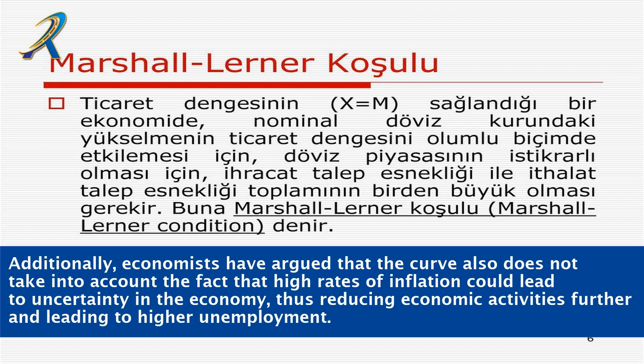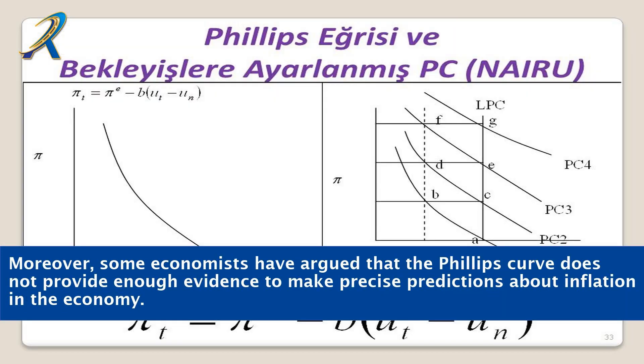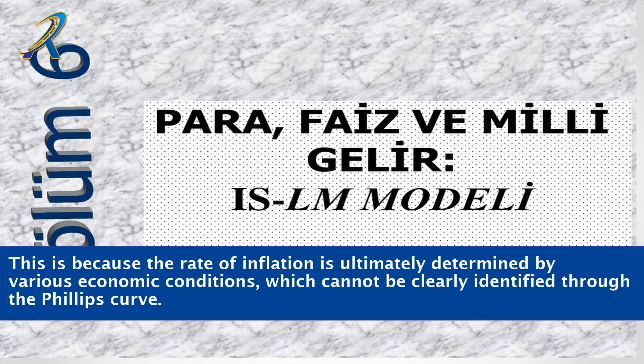Additionally, economists have argued that the curve does not take into account the fact that high rates of inflation could lead to uncertainty in the economy, thus reducing economic activities further and leading to higher unemployment. Moreover, some economists have argued that the Phillips curve does not provide enough evidence to make precise predictions about inflation in the economy, as the rate of inflation is ultimately determined by various economic conditions which cannot be clearly identified through the Phillips curve.